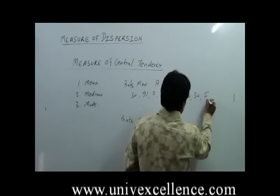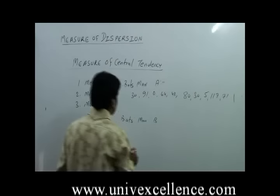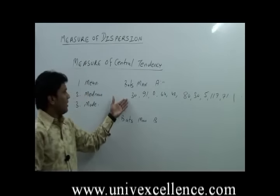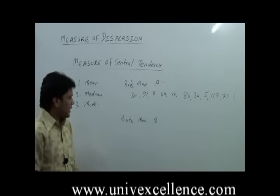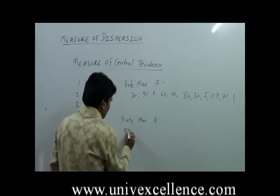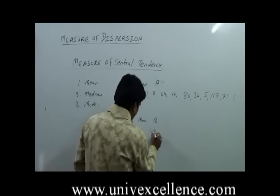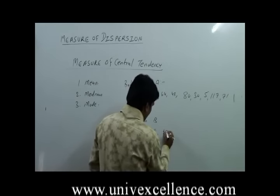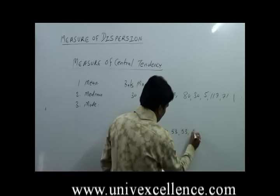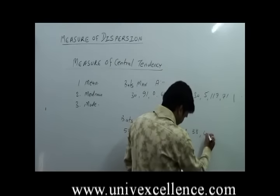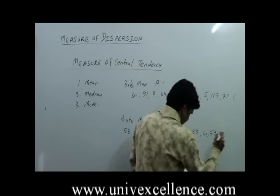These are the marks, these are the runs done by Batsman A. And Batsman B scored 53, 46, 48, 15, 53, 53, 58, 16, 57, and 52.